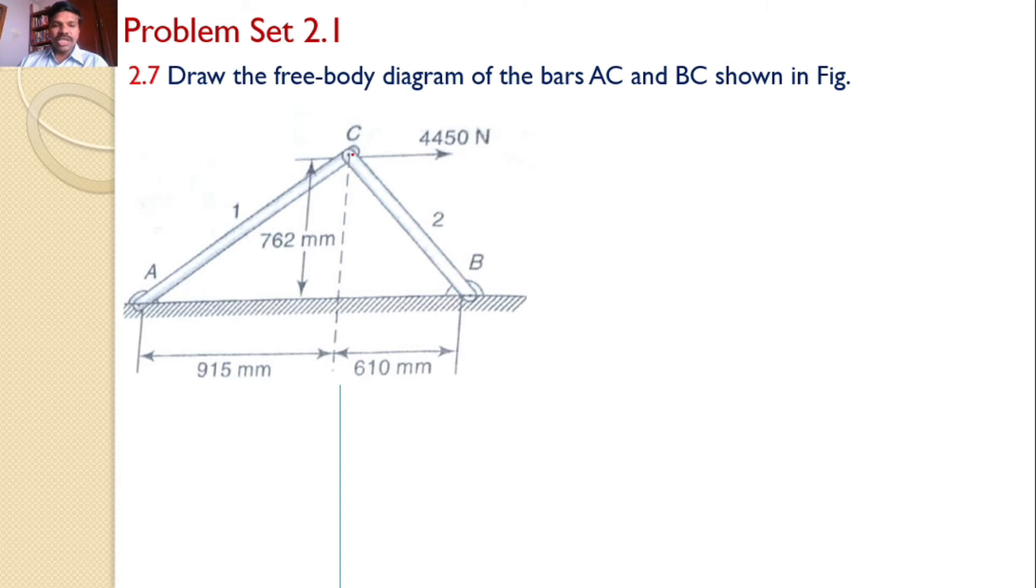Now since at C a force of 4450 Newtons is acting towards the horizontal direction, we can observe that the string AC is in tension and the bar CB is in compression. Since it is pulling in this direction, the bar AC will get elongated and the bar CB may get compressed. Hence the force acting at AC is tensile, let the magnitude be S1, and the force acting at CB is compressive and that magnitude is S2. Clearly we can see it is compression S1, clearly we can see it is tensile.